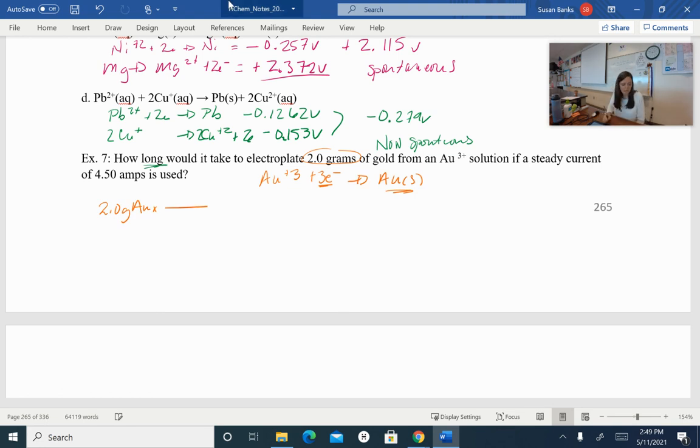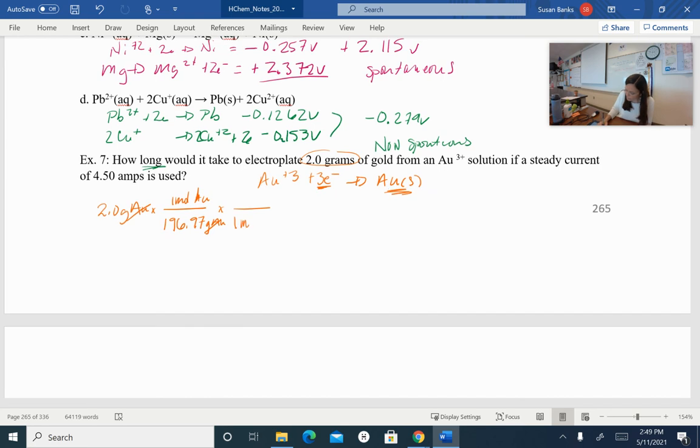So if I look up on my periodic table, my molar mass for gold is 196.97 grams of gold is in one mole of gold. So my grams of gold cancel, and I have moles of gold. I'm going to use this ratio. For one mole of gold, I have three moles of electrons. So one mole of gold uses three moles of electrons. So my moles of gold cancel. Then I'm going to use Faraday's constant. So one mole of electrons is 96,485 coulombs. So my moles cancel out.